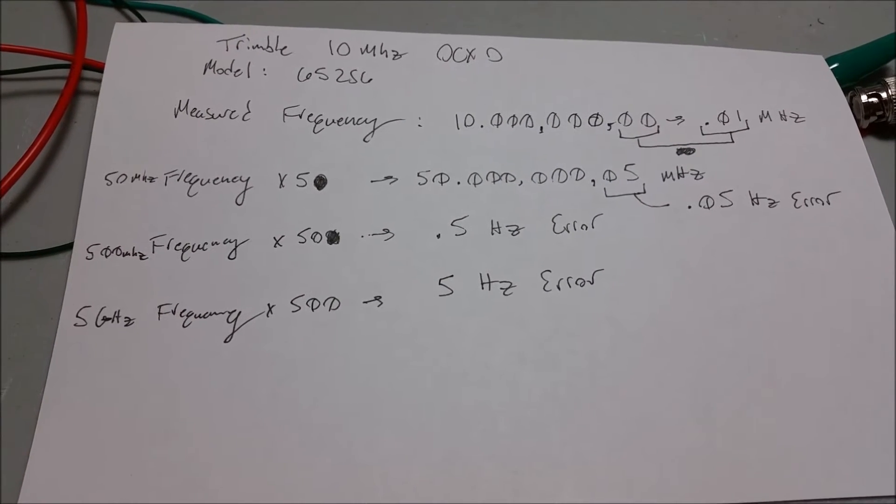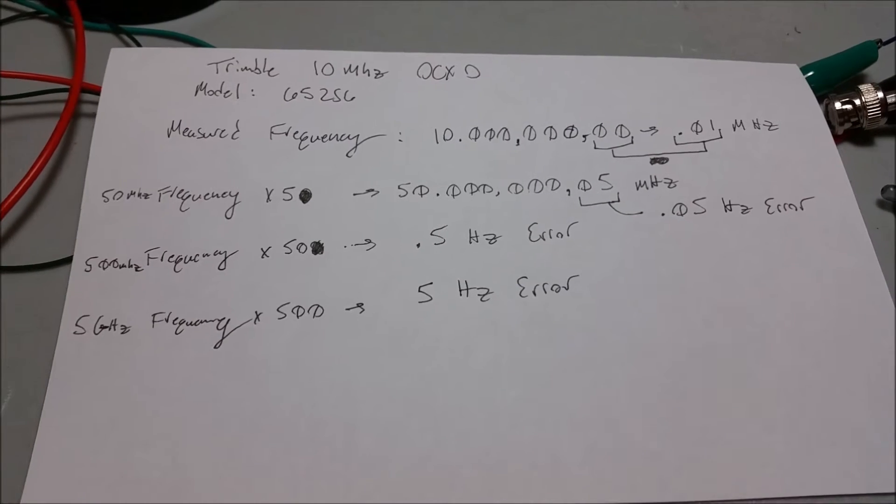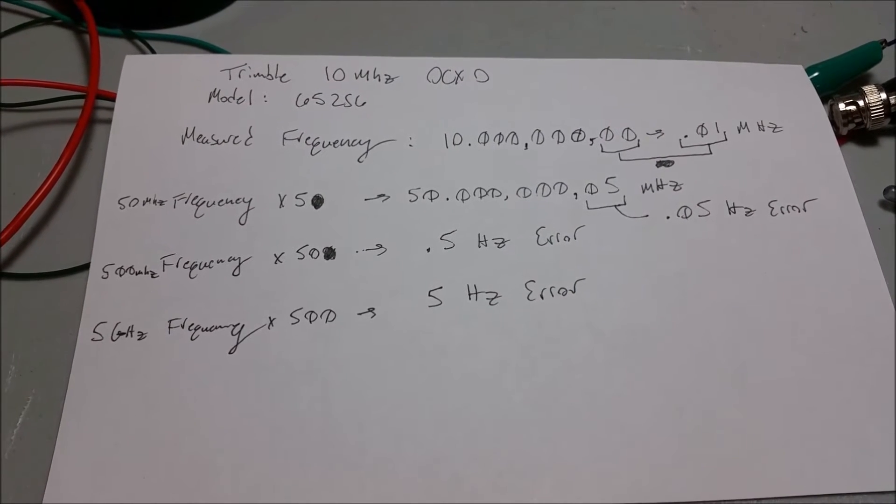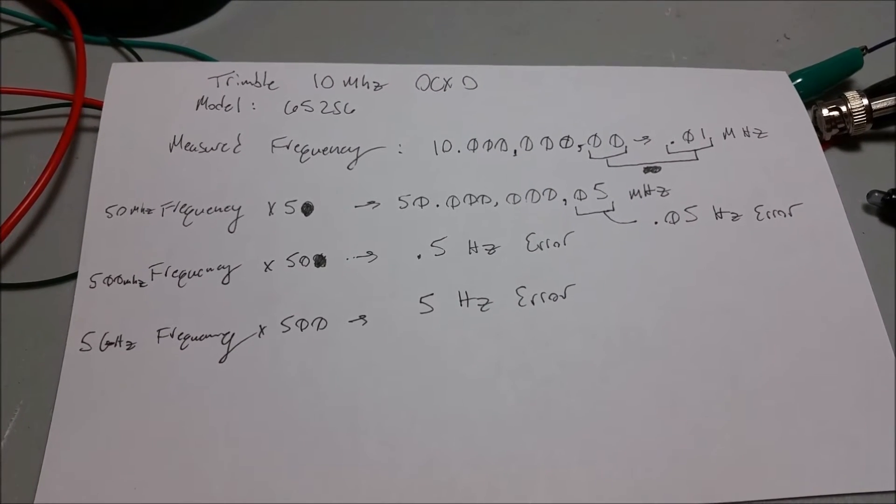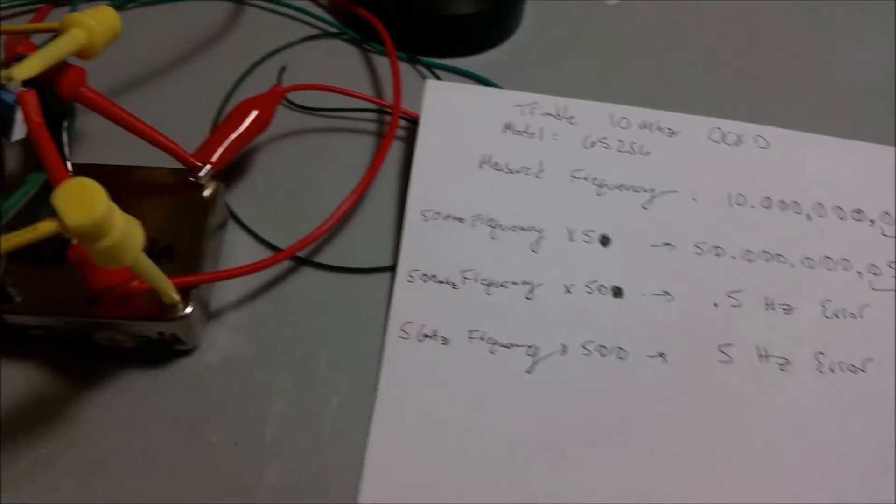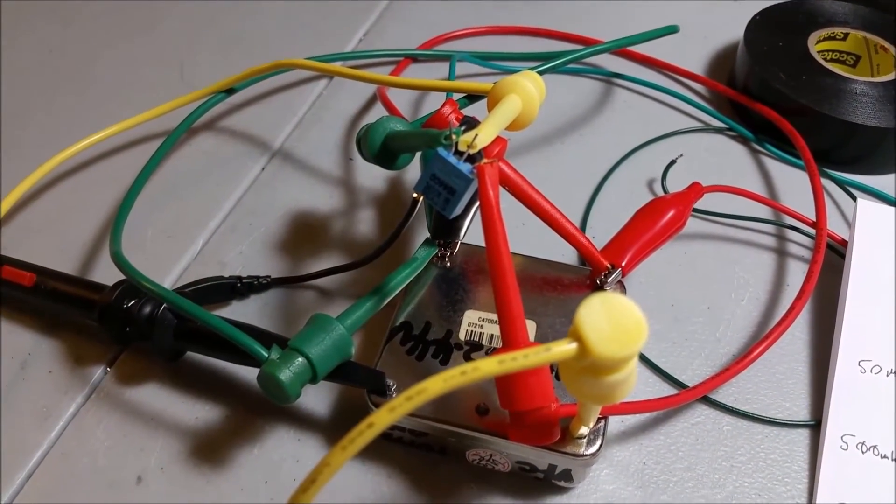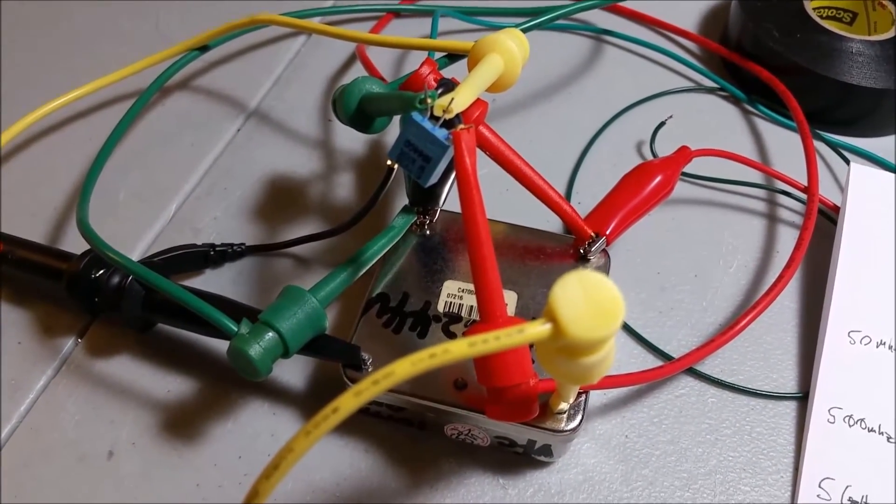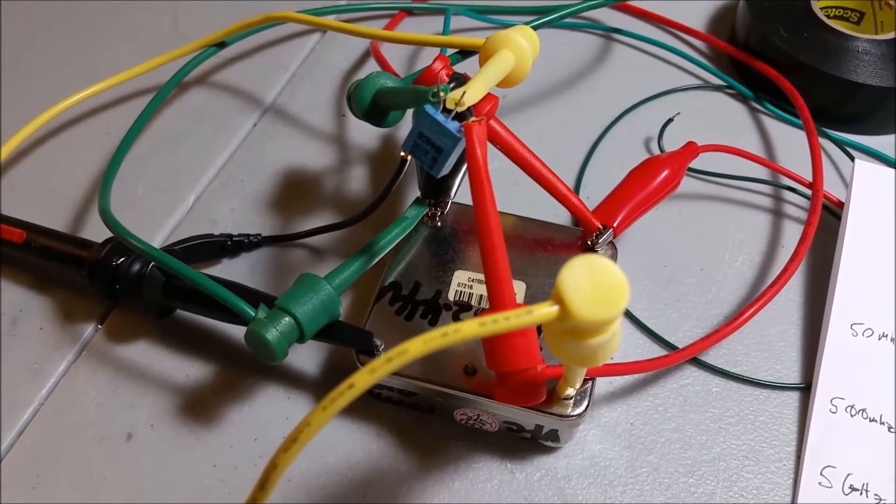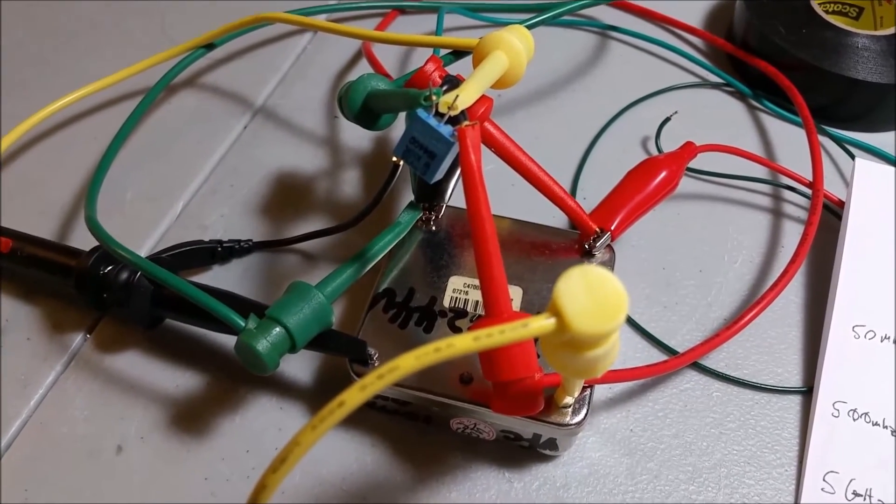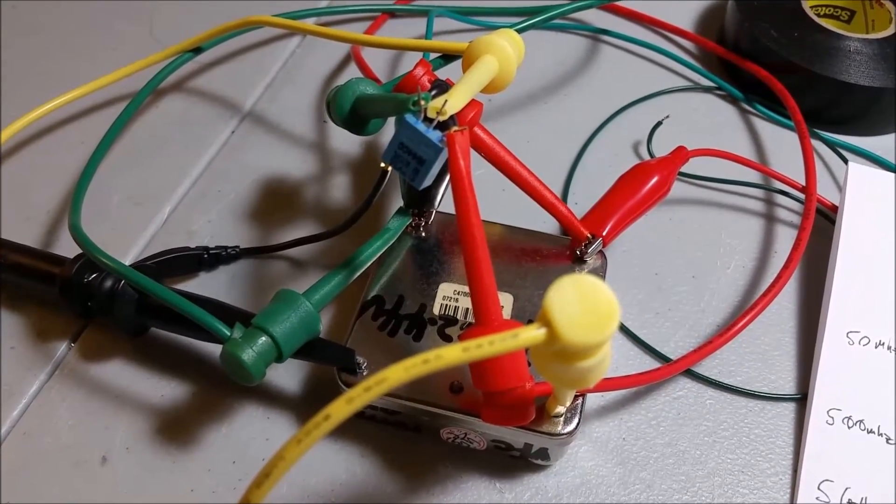So you could definitely get a nice stable offset that will be stable, even with the aging of the oscillator, by manually offsetting it with one of these units. And you can make this even more stable by placing it in a little box and putting in some insulation around it to make it even more stable.